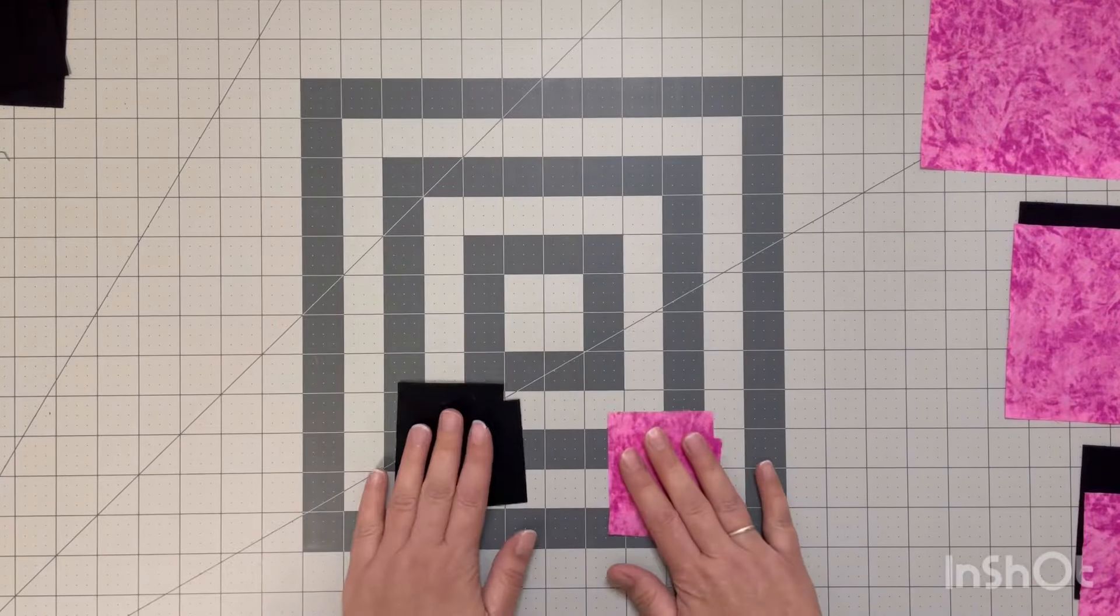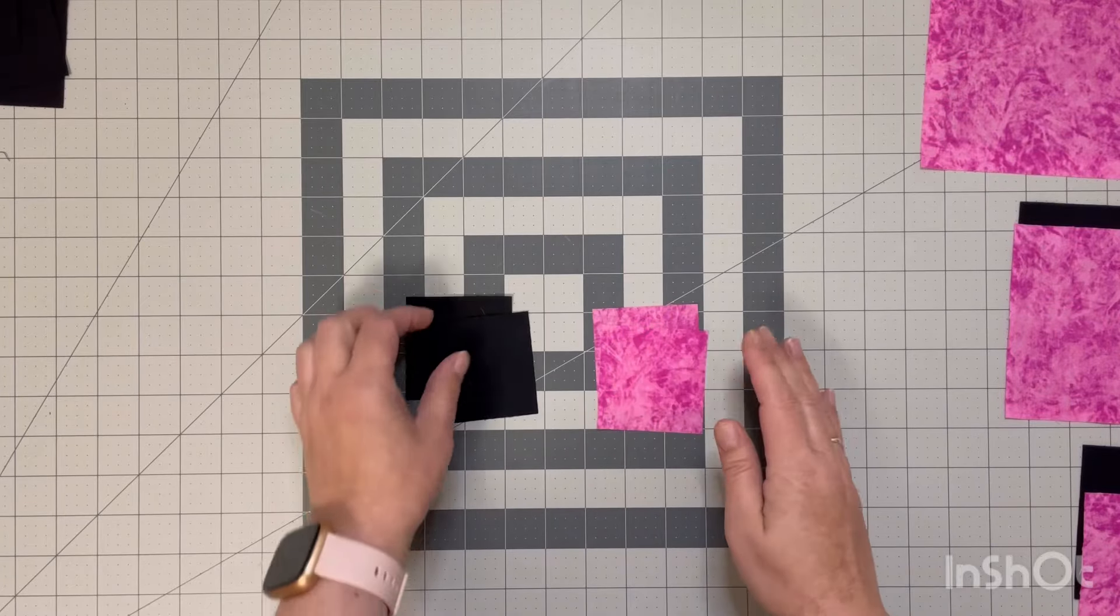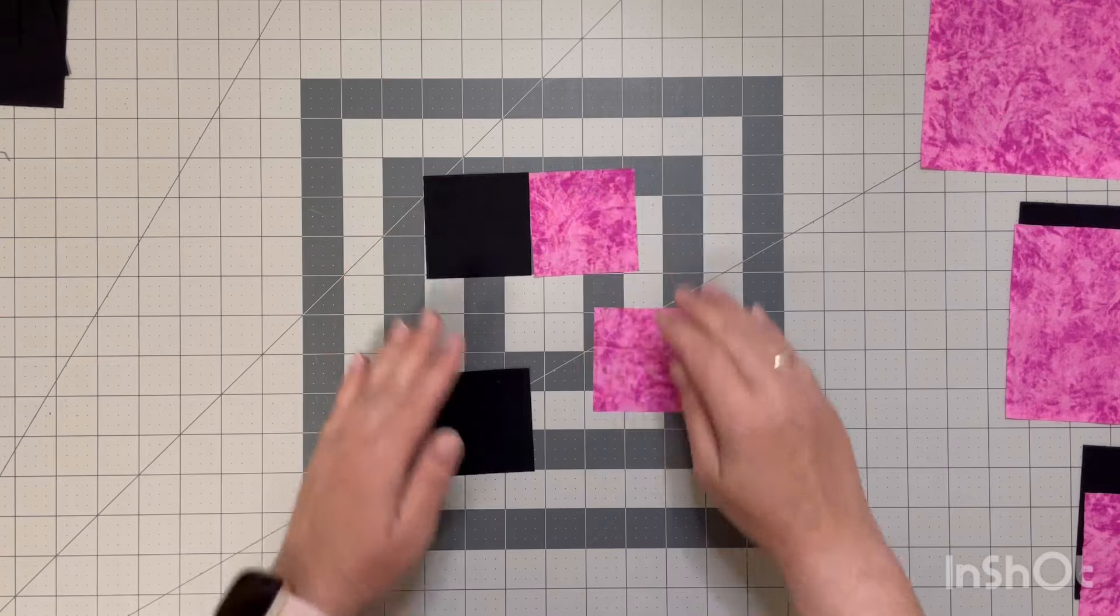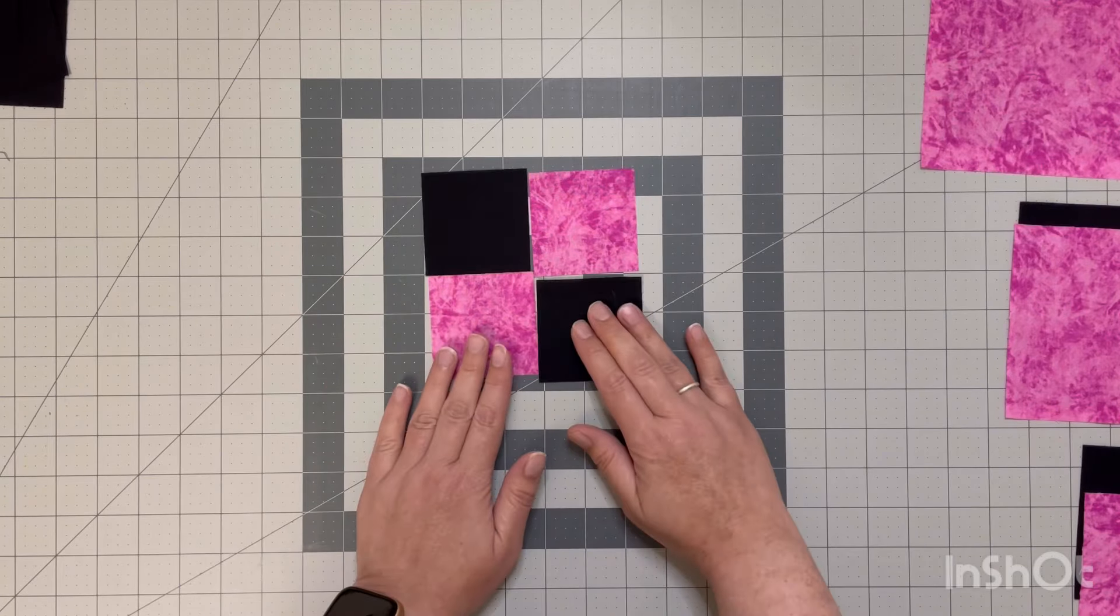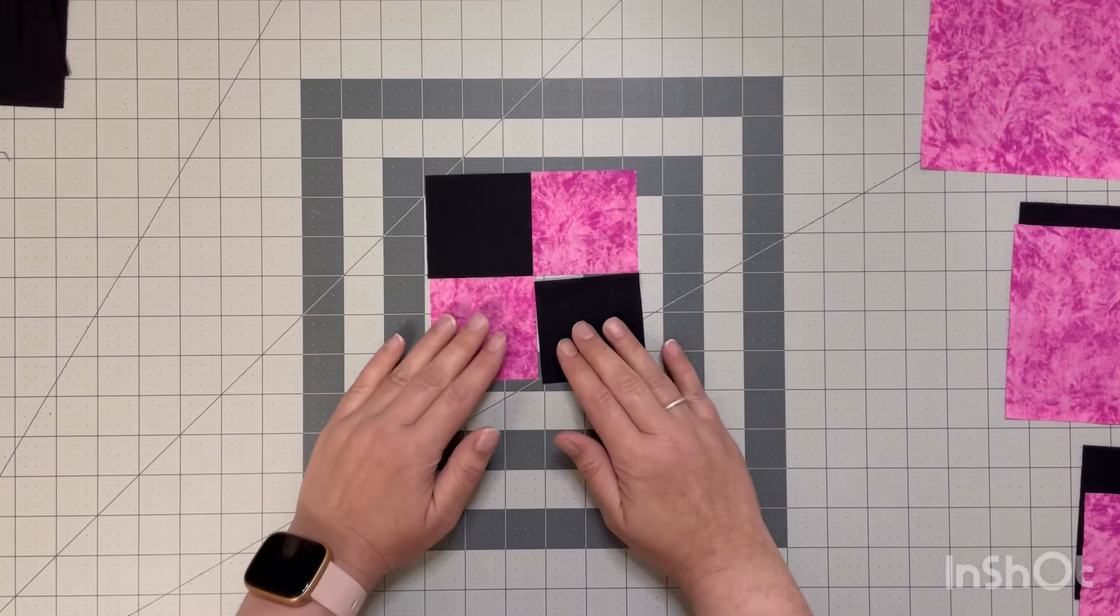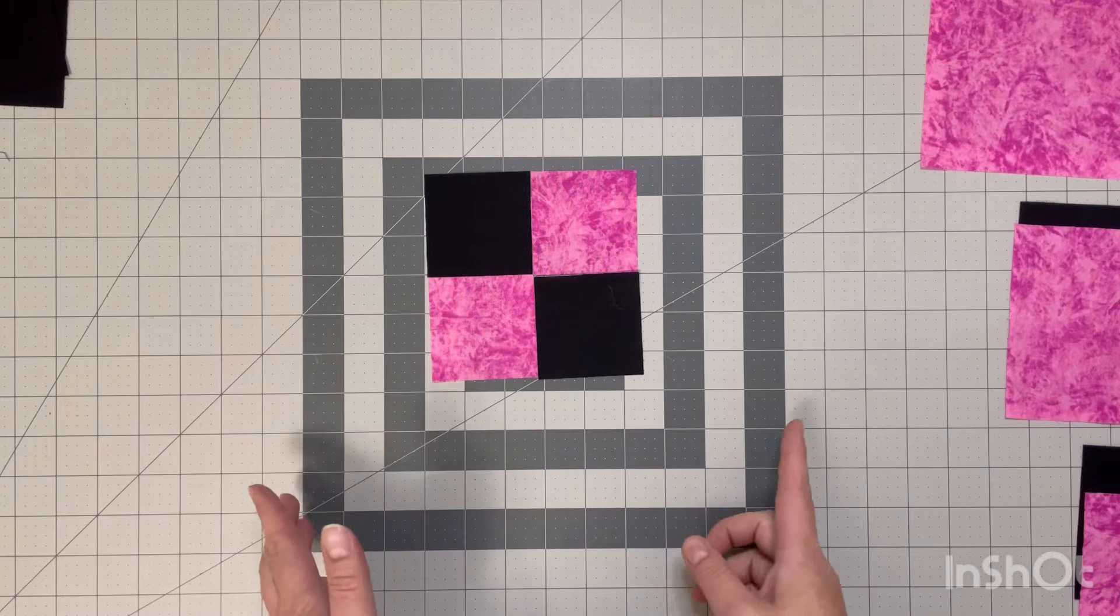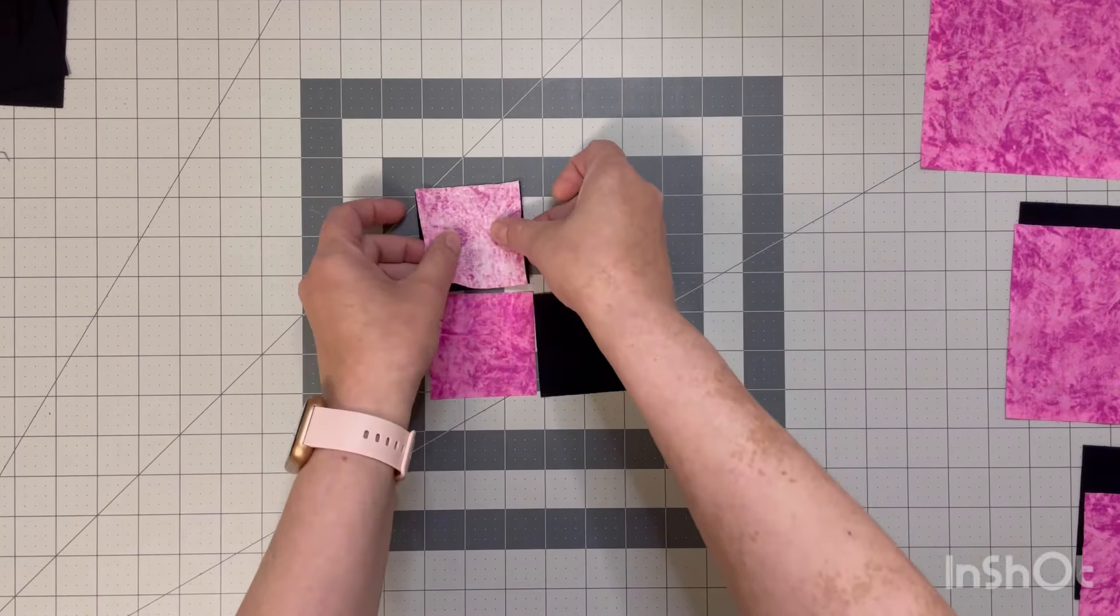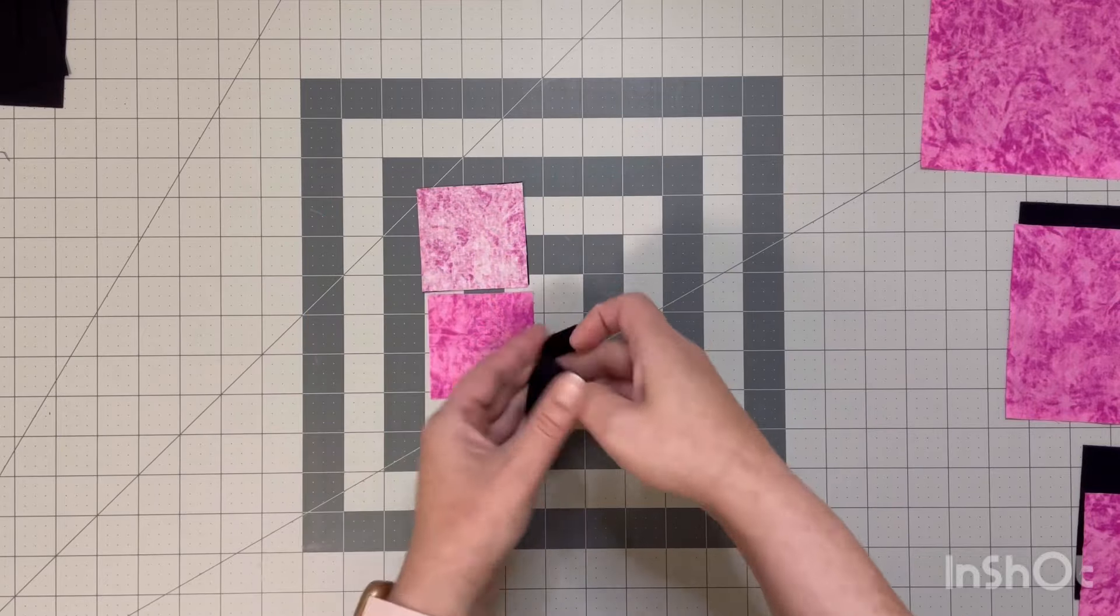With those we need to make a little four patch, so you should have two of each color measuring 2 and 5/8 of an inch. Like I said they're odd sizes so I will try to repeat them, but they will be in the description box below. You just want to make a little four patch and make sure that you have your colors alternating so that you get a mini checkerboard look.